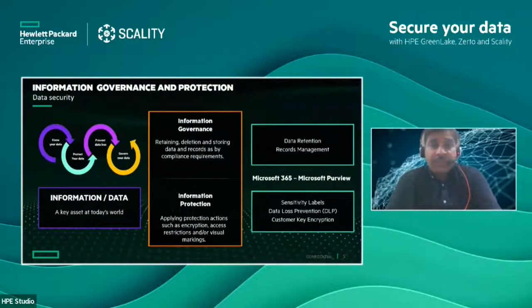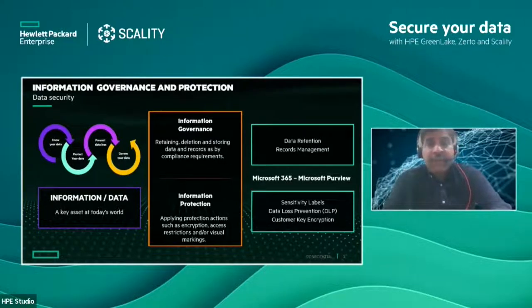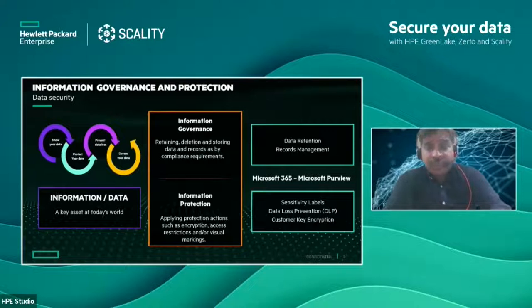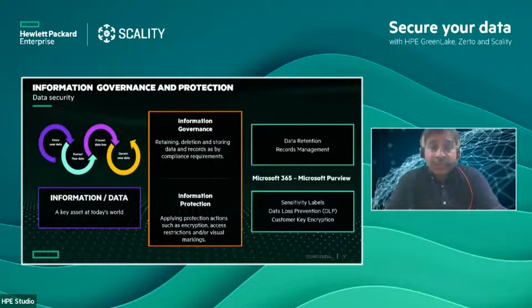Going further, there are two differentiations: information governance and information protection. Information governance covers data retention and records management — how we comply with different compliance requirements. Information protection covers different controls: encryption controls, access rights, zero trust deployment, data loss prevention techniques, and key encryption methods. HP further breaks down the overall approach into information governance plus information protection to help customers manage the entire data lifecycle with security as an integral part of the value chain.